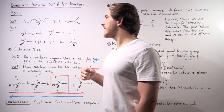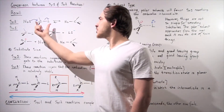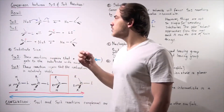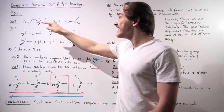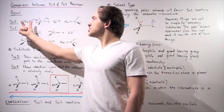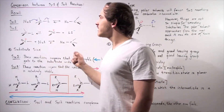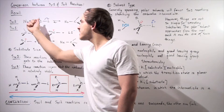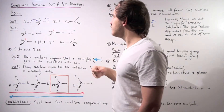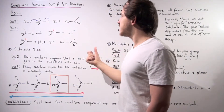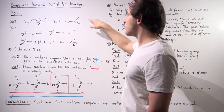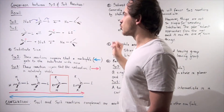In an SN2 reaction, we have the substrate and a nucleophile undergoing a single-step reaction in which the nucleophile attacks the carbon from the rear side, kicking off the leaving group, producing the new substrate as well as the leaving group.